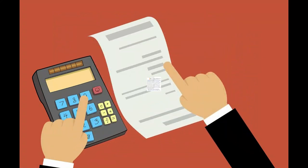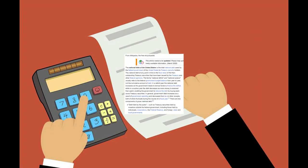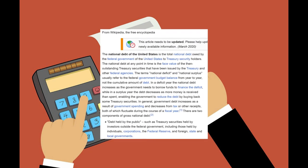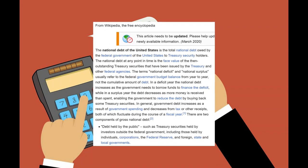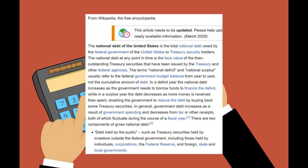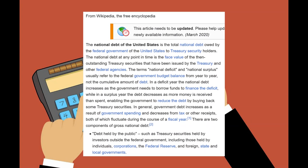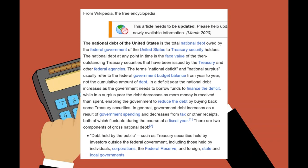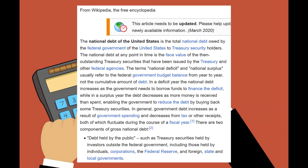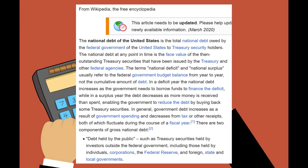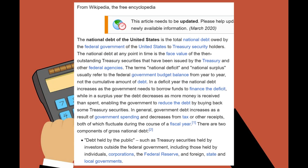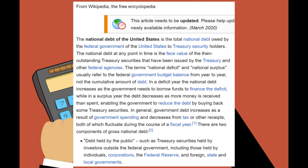According to Wikipedia, the national debt of the United States is the total debt owed by the federal government to treasury security holders. The national debt at any point in time is the face value of outstanding treasury securities issued by the treasury and other federal agencies. In terms of national deficit, the national surplus usually refers to the federal government budget balance for the year, not the cumulative amount of debt.